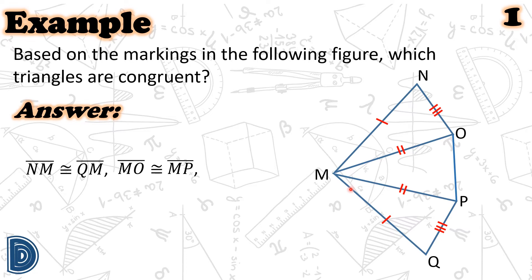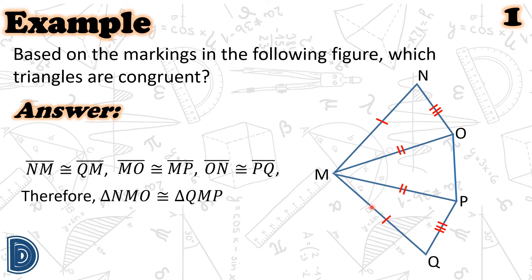There is another pair with the same markings. These are segment NO and segment PQ. Hence, we have triangle NMO with corresponding sides congruent. Therefore, triangle NMO is congruent to triangle QMP by the SSS postulate.